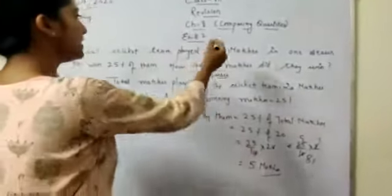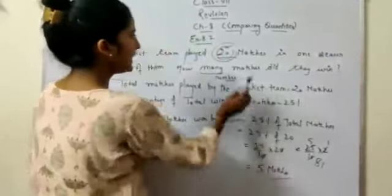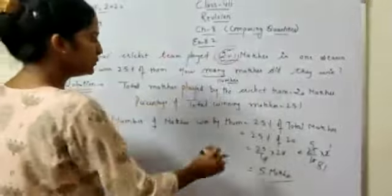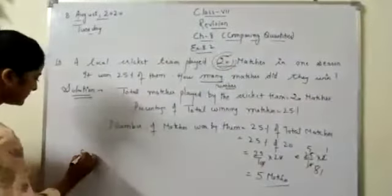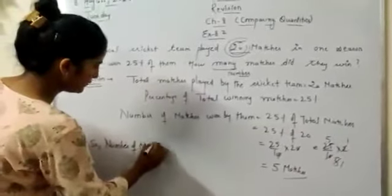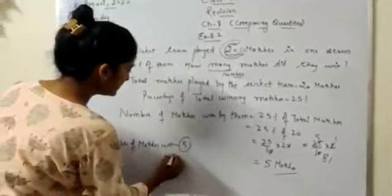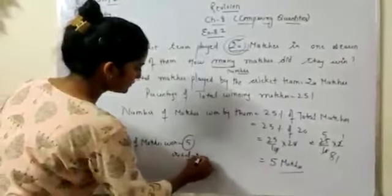It means if there are 20 matches, 5 matches won by the team and 15 matches they lose. So, number of matches won is 5 out of 20.